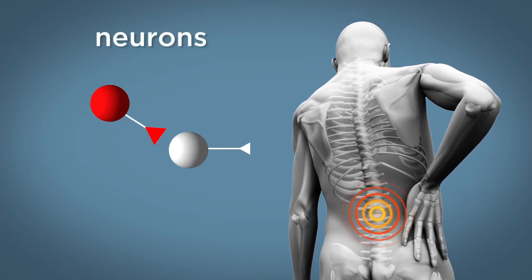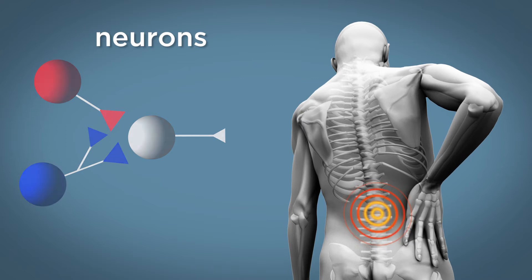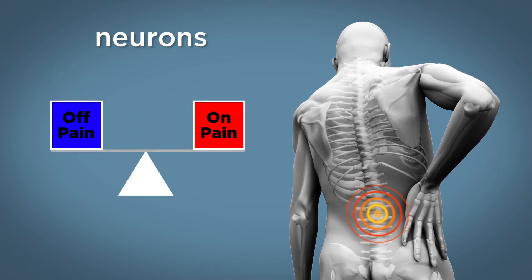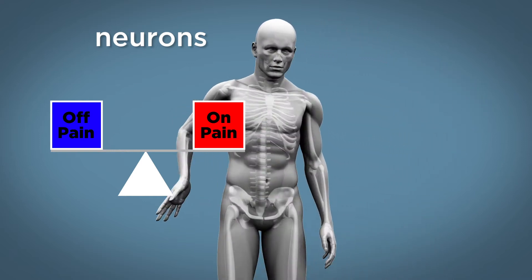Pain cells, called neurons, turn on pain. Your brain also has neurons that turn off pain. Normally, there is an even balance between the activity of the neurons that turn on pain and those that turn off pain, so you do not feel pain.